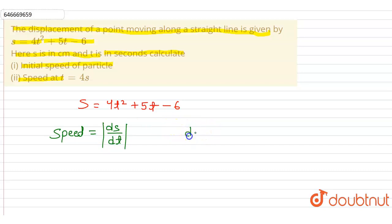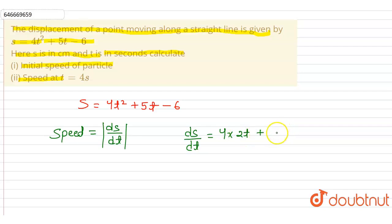So we have ds/dt. Differentiating s with respect to time: the first term is 4t², and the differentiation of t² is 2t, so it becomes 4 × 2t. Then plus 5t, and the differentiation of t is 1, so 5 × 1. Then we have the constant 6, and the differentiation of a constant is 0. So finally ds/dt = 8t + 5.